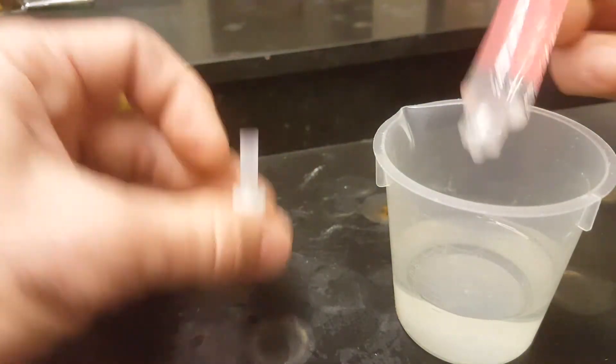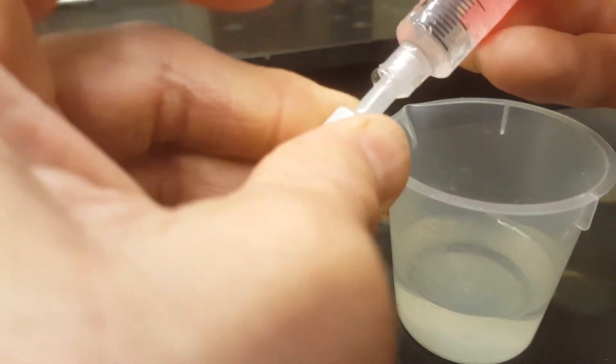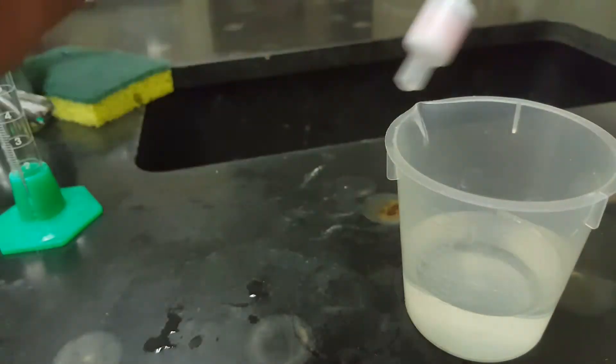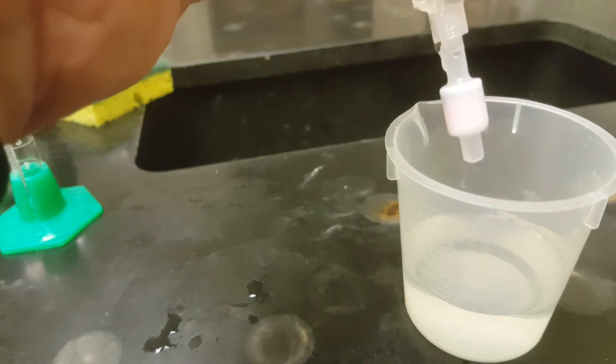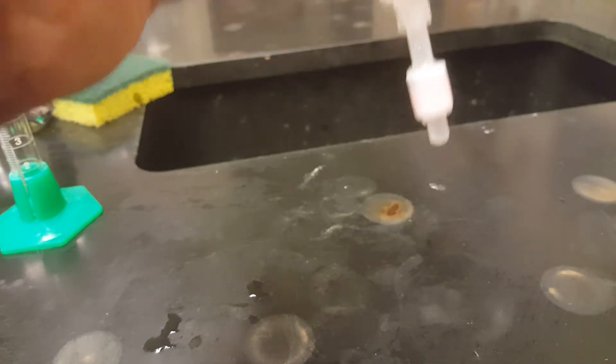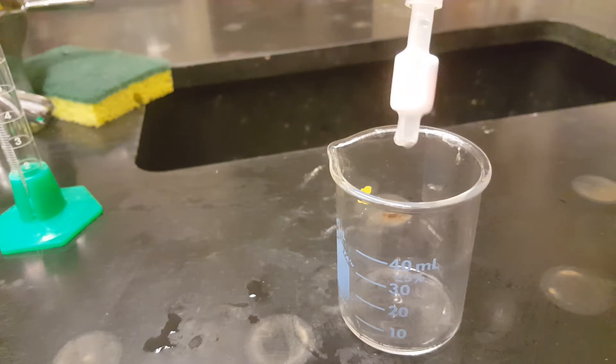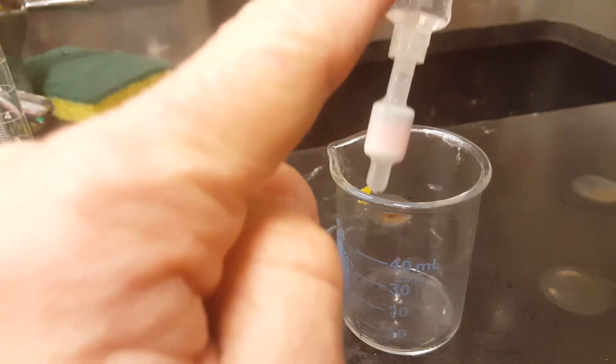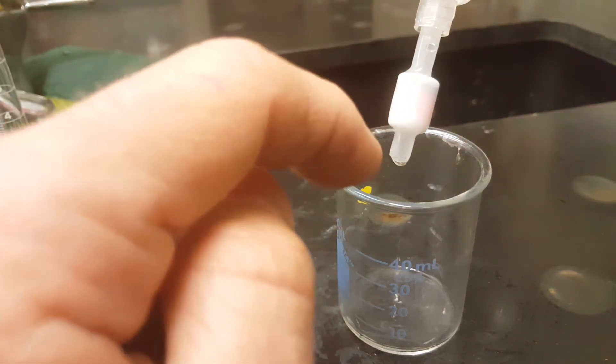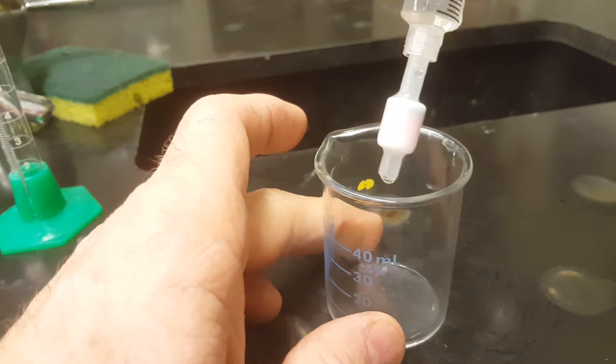I've got my 10 milliliters. Hook that back up to your cartridge. And you want a slow and steady flow rate. You can use your beaker again. And while you're pushing your eluent through your cartridge, you want to keep an eye on the color of your solution.